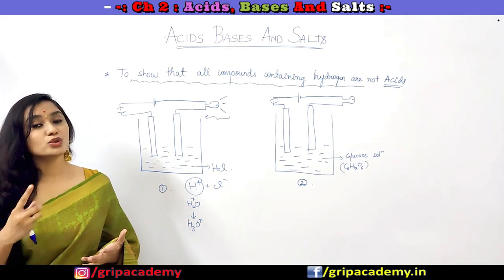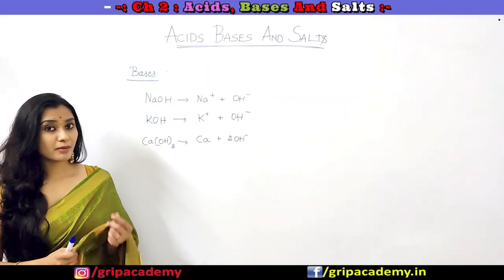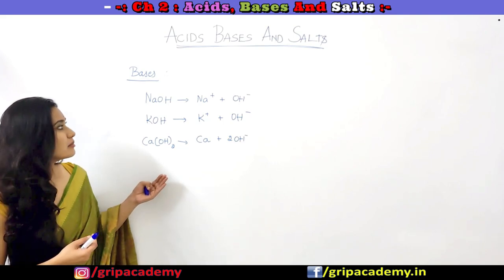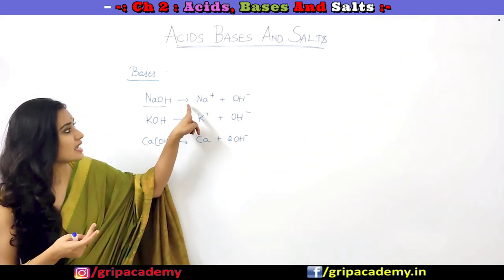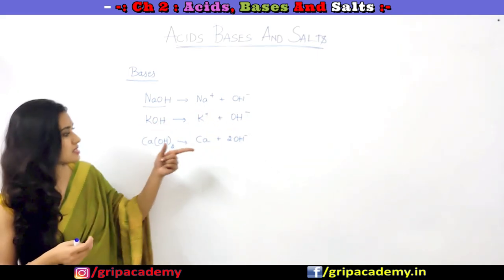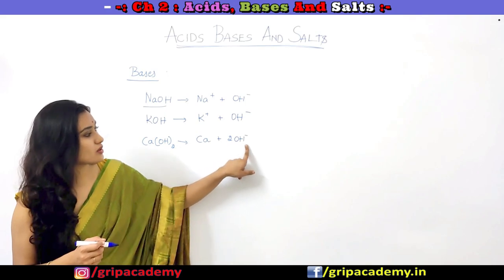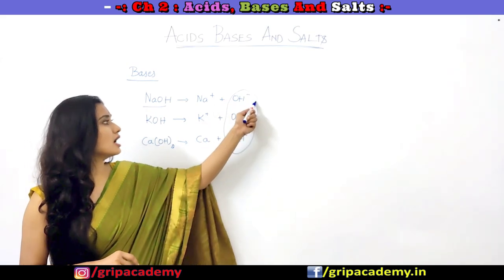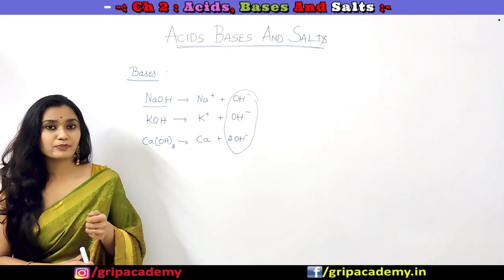With this we can conclude that all compounds, even though they contain hydrogen atoms, cannot be called acids. Now coming to bases: what do all bases have in common? Sodium hydroxide dissociates and produces OH- ions. Similarly, potassium hydroxide produces K+ and OH- ions. And calcium hydroxide produces calcium ions and hydroxyl ions. So we can conclude that all bases will be producing hydroxyl ions in common. Whereas acids will be producing H3O+ ions in common.